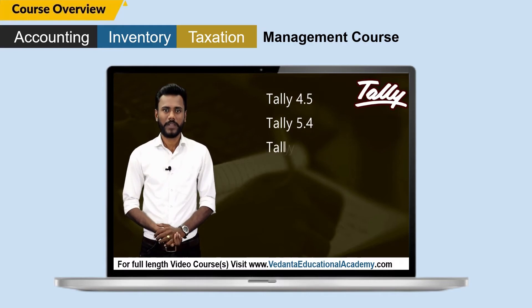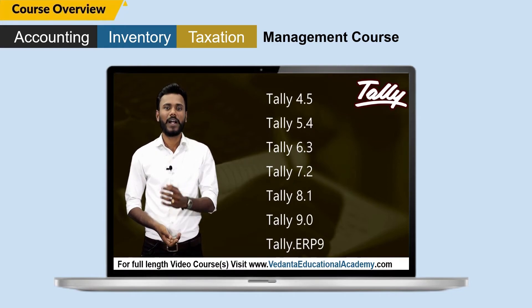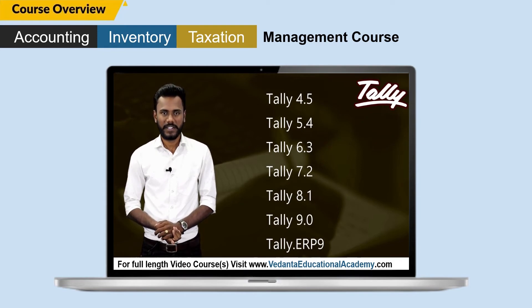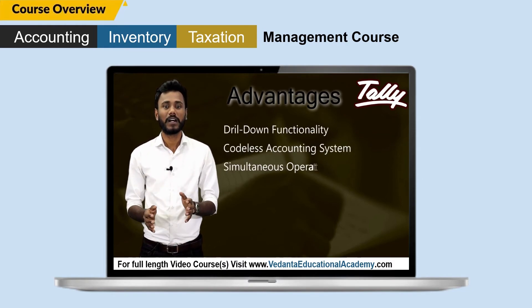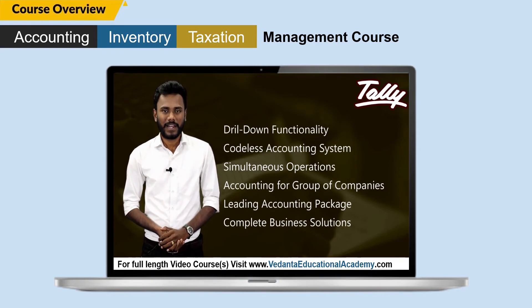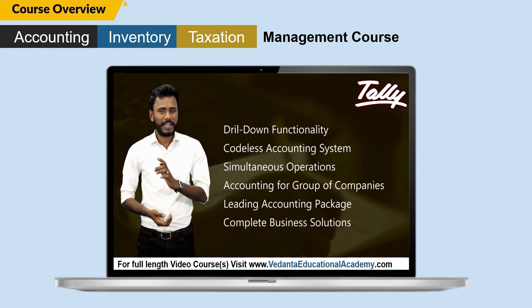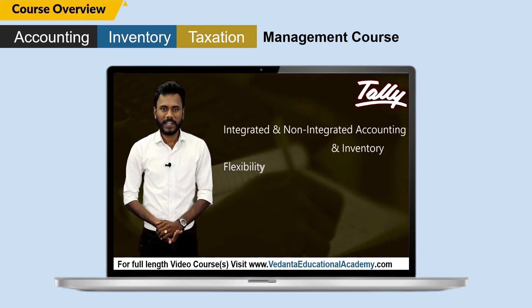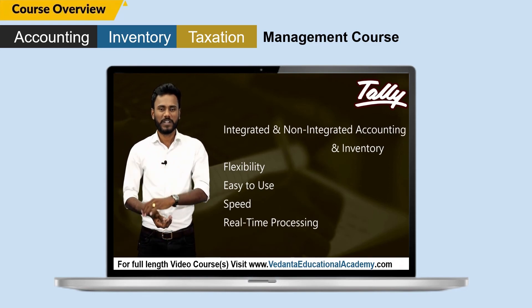The Tally versions are 4.5, 5.4, 6.3, 7.2, 8.1, and 9.0. After releasing Tally ERP9, Tally introduced a new version called Tally 18 or Tally Prime. Tally accounting software comes with a drill-down option which can track each and every detail of a transaction. It helps in maintaining simple classification of accounts, unlimited accounting periods, simultaneous operations of companies, and accounting for a group of companies — offering flexibility and real-time processing.